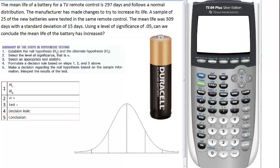Good day students. Today we're going to look at another example of hypothesis testing. The first video we did on hypothesis testing, you saw one sample z-test. This is going to look at a different test. The mean life of a battery for a TV remote control is 297 days and follows a normal distribution. The manufacturer has made changes to try to increase its life. A sample of 25 of the new batteries were tested in the same remote control. The mean life was 309 days with a standard deviation of 15 days. Using a level of significance of 0.05, can we conclude the mean life of the battery has increased?